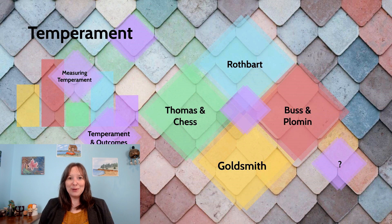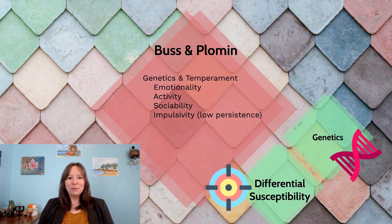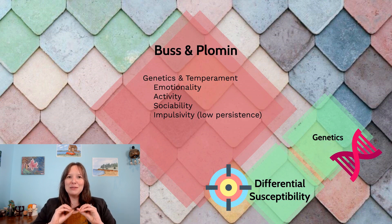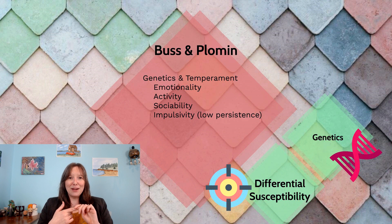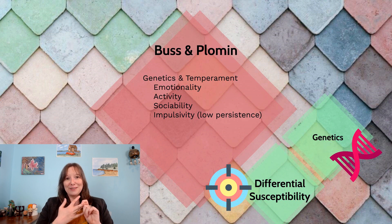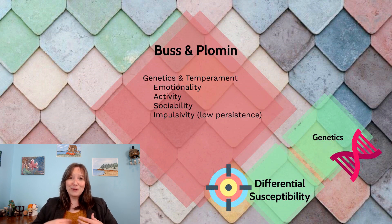Next we're going to talk about the third school of temperamental theory: the Buss and Plomin approach. With David Buss and Robert Plomin, we're talking more about the biology of temperament — getting further into the biology to such a specific extent that we're talking about genetics, even at the molecular genetic level. They believed in four different dimensions of temperament. I won't go into them in a lot of detail because they've been thoroughly explained through the Rothbart and Thomas and Chess approaches. There was emotionality, which overlaps with negative affectivity, intensity, or reactivity; activity; sociability, which overlaps with Rothbart's theory of surgency; and impulsivity, described as the inverse or the lack of persistence or effortful control.